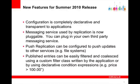There are some new features for the summer 2010 release. First, configuration is completely declarative and transparent to applications. Also, the messaging service used by replication is now pluggable — you can plug in your own third-party messaging service into the push replication provider. Push replication can also be configured to push updates to other services such as file systems. Finally, published entries can be easily filtered and coalesced using a custom filter class written by the application, or by using declarative condition expressions embedded in the XML.